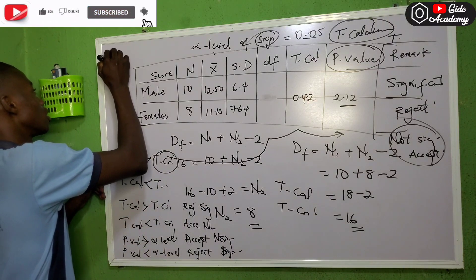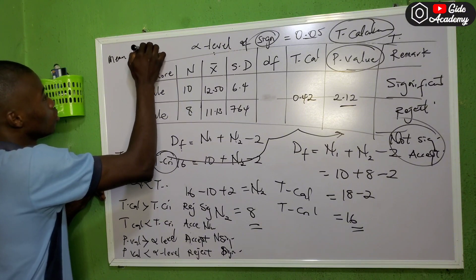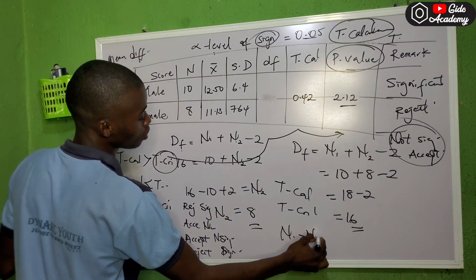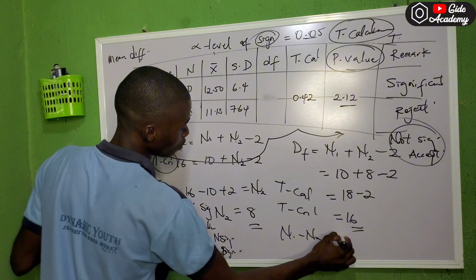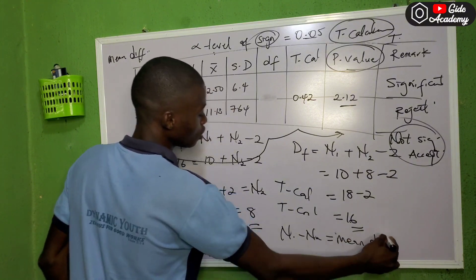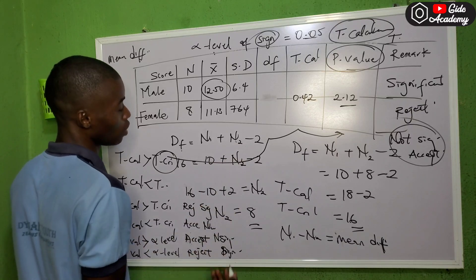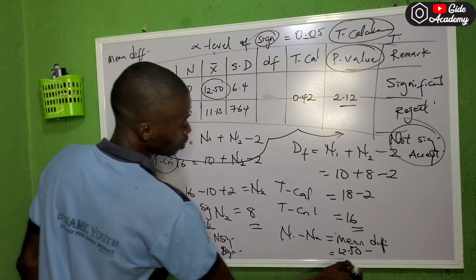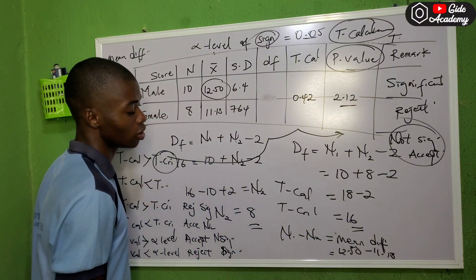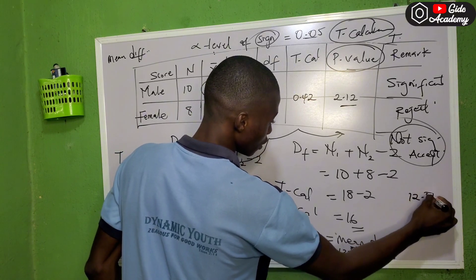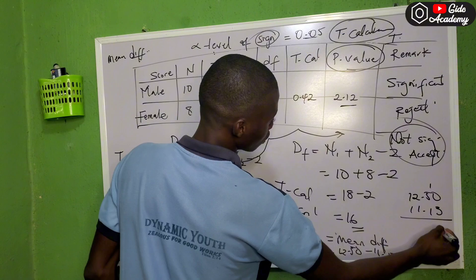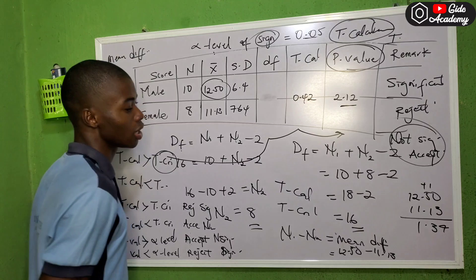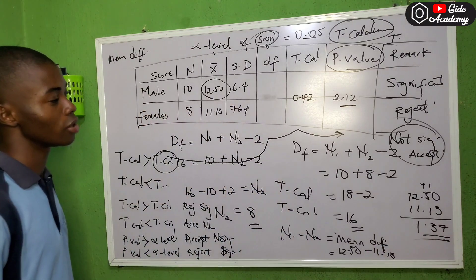Another concept is the mean difference. To calculate the mean difference, you subtract s-bar 2 from s-bar 1: mean difference = 12.50 minus 11.13. That gives us 1.37. So the mean difference is 1.37.